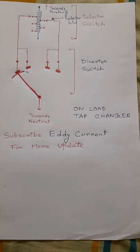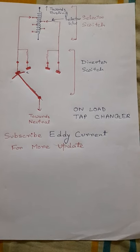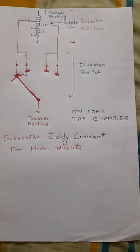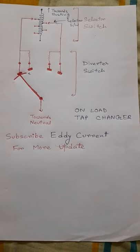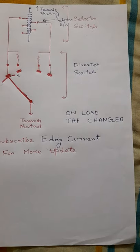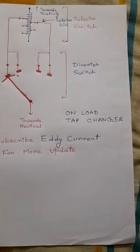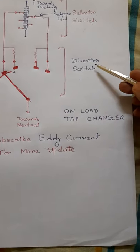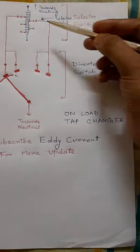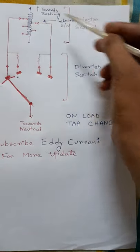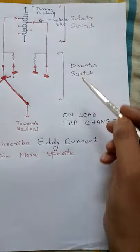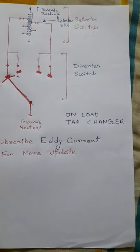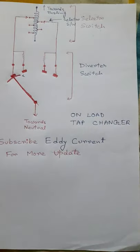Hello friends, welcome back to AD Current channel. In this video, we will discuss the operating principle of an onload tap changer or OLTC using this drawing. In an onload tap changer, tap changing operation is performed by two types of switches: selector switch and diverter switch. Actual tap changing is performed by selector switch, whereas diverter switch is used to divert the load current during tap changing operation.